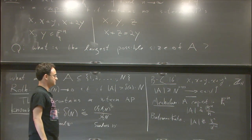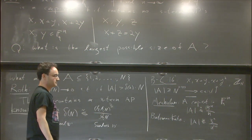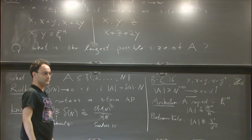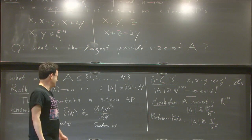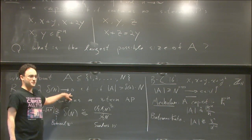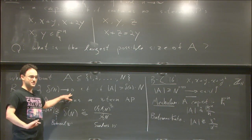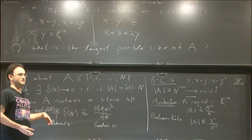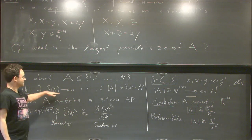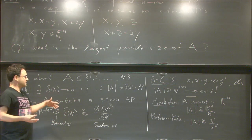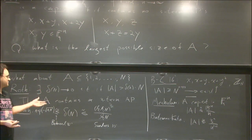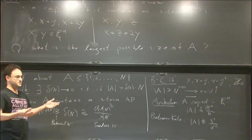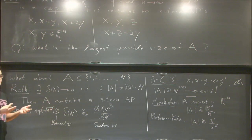Is there anything special about three terms as opposed to k terms? It gets much harder. The proof for three terms is relatively manageable. Gowers's proof for three terms is two or three pages; for four terms it's 20 pages; the full proof is about 100 pages. The Fourier techniques — L2 estimates — give you three terms. For four terms you need higher order Fourier analysis or ergodic theory. Even the quantitative bounds for k-term progressions involve tower functions.